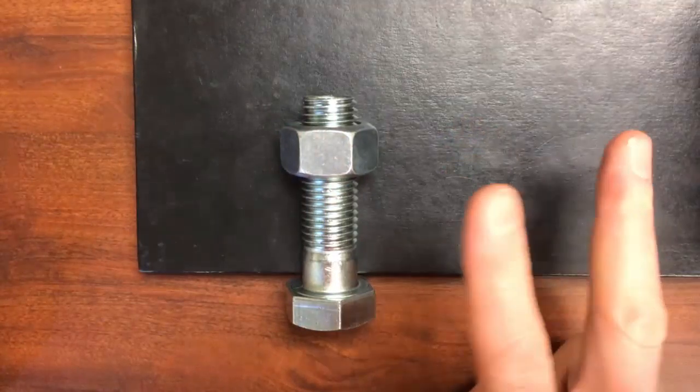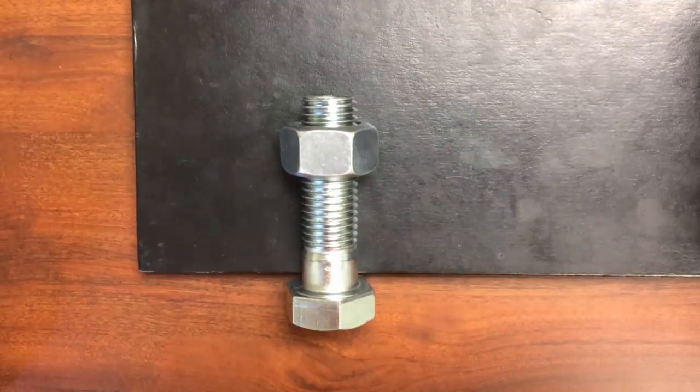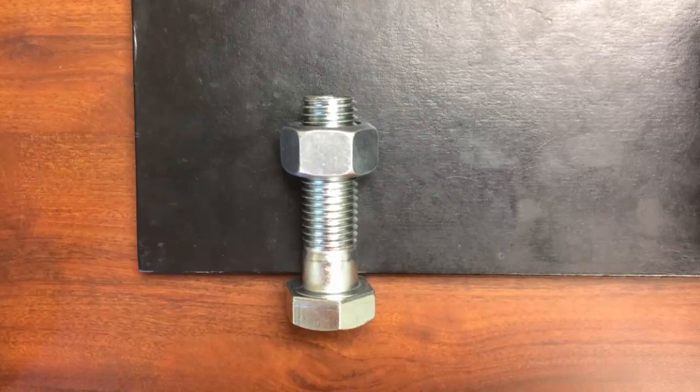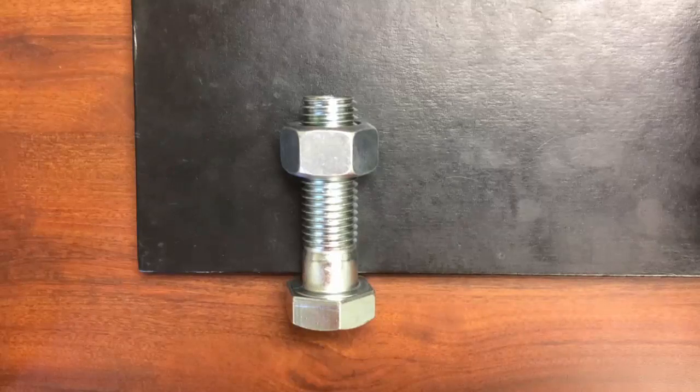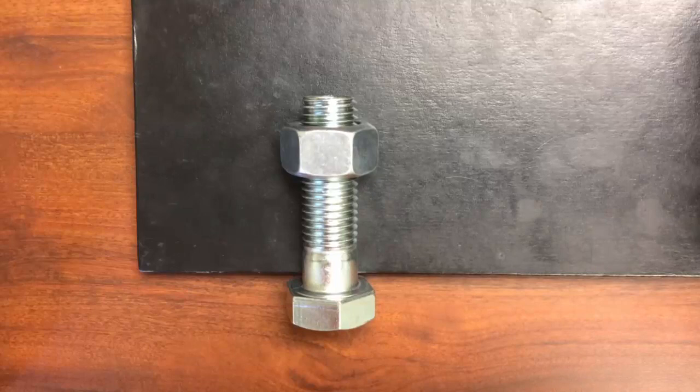And so really what we've seen there is two different things. One of those is how we can use the right-hand rule to think about both tightening and loosening bolts. And then also, as we think about the motion of bolts versus nuts, that the nuts always move relatively in the opposite direction as the bolt.